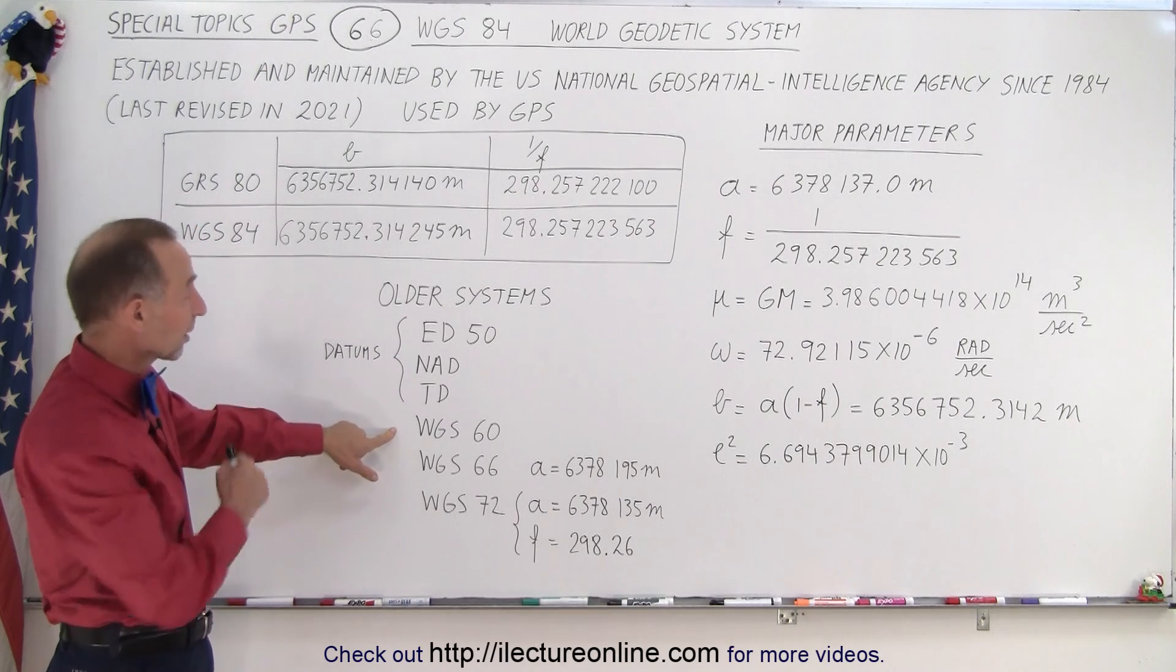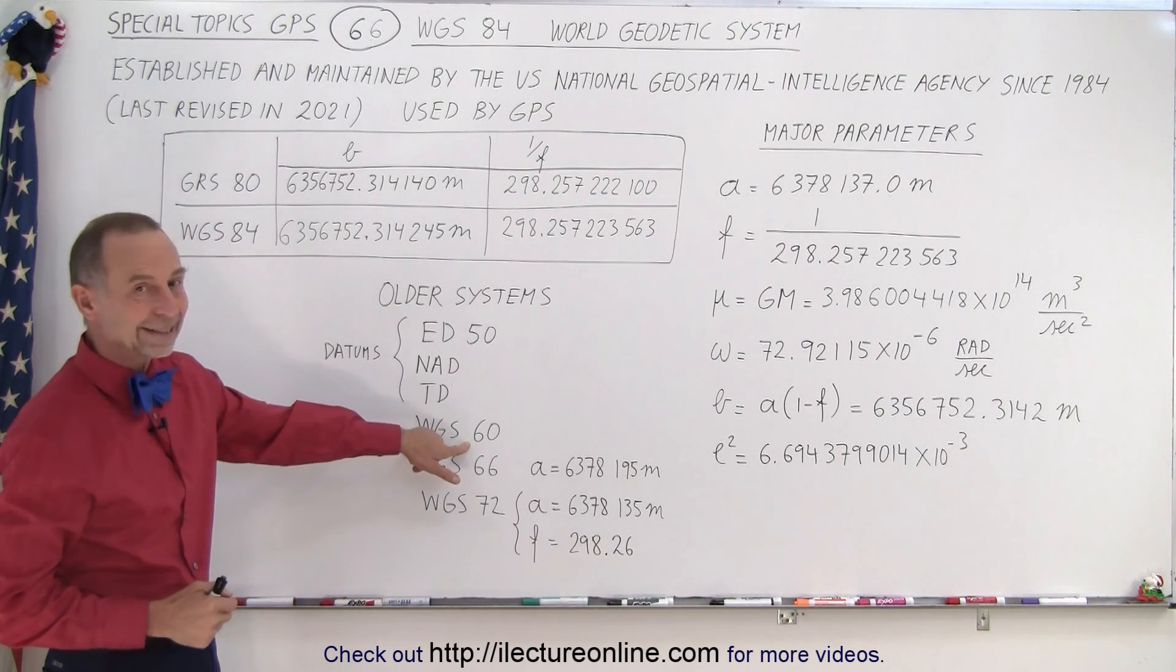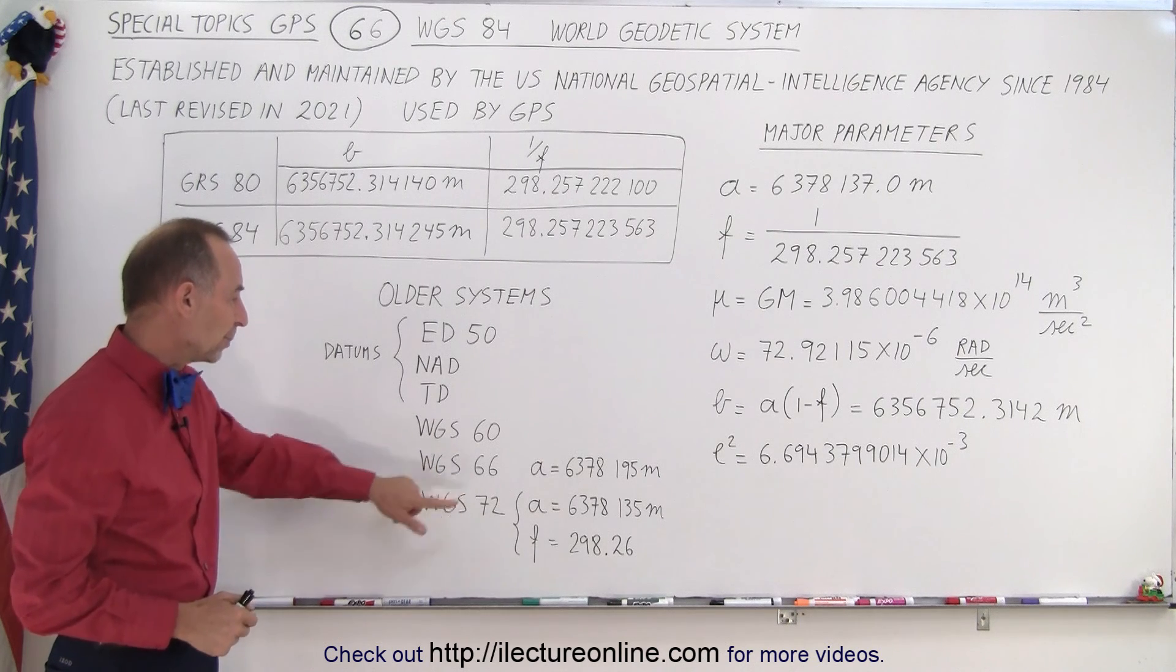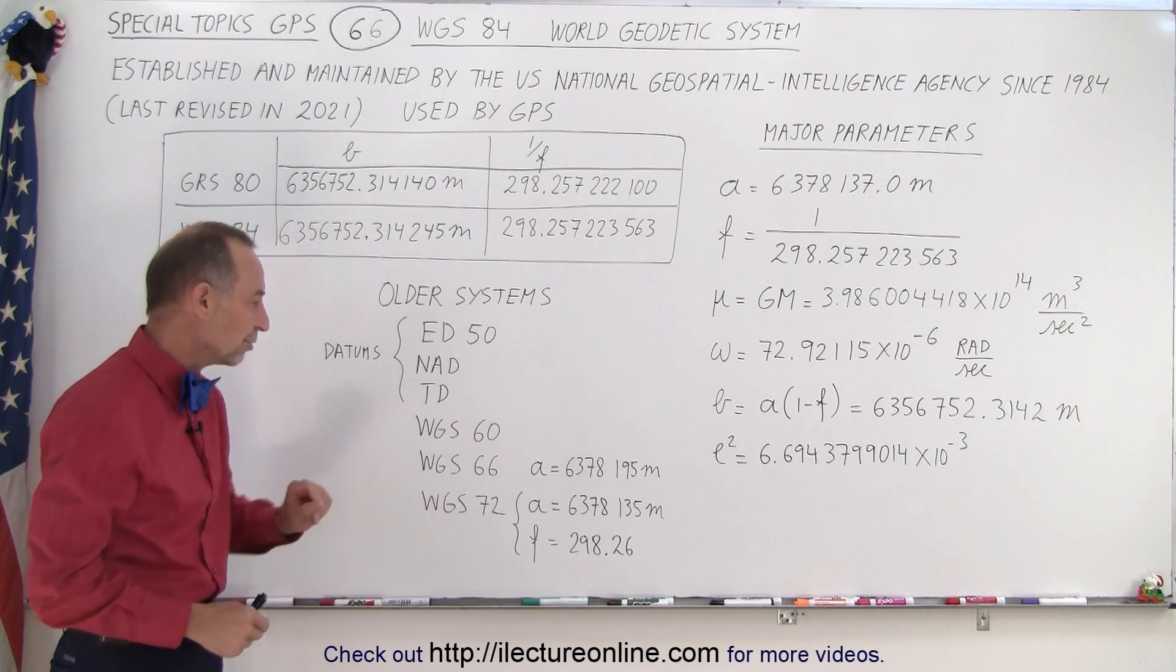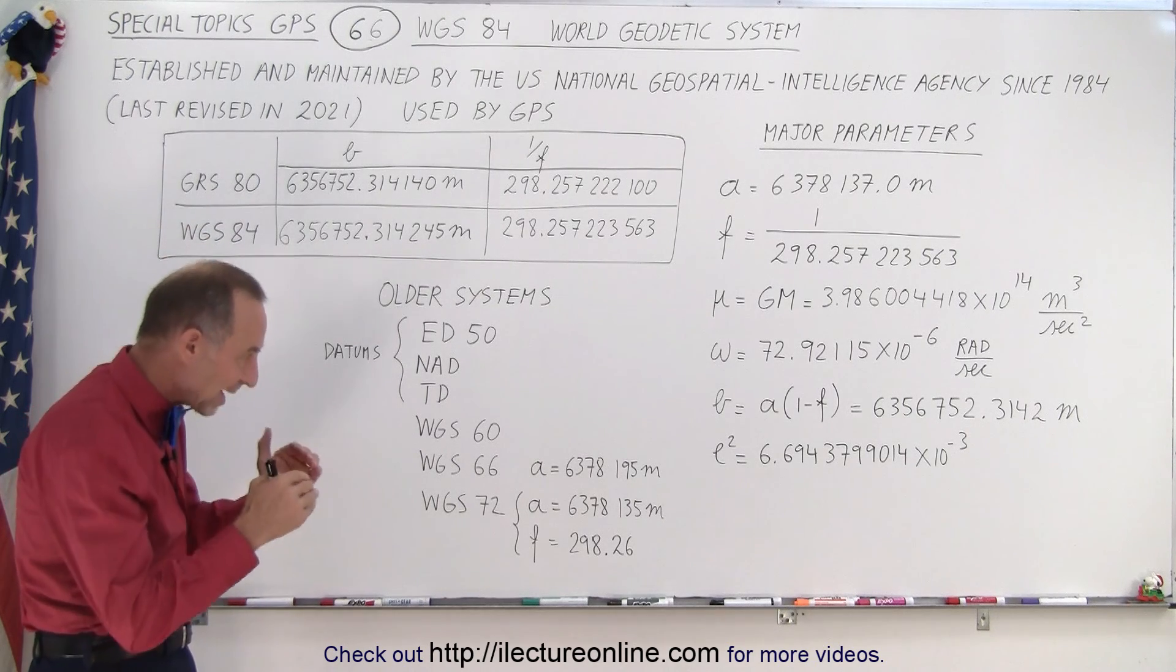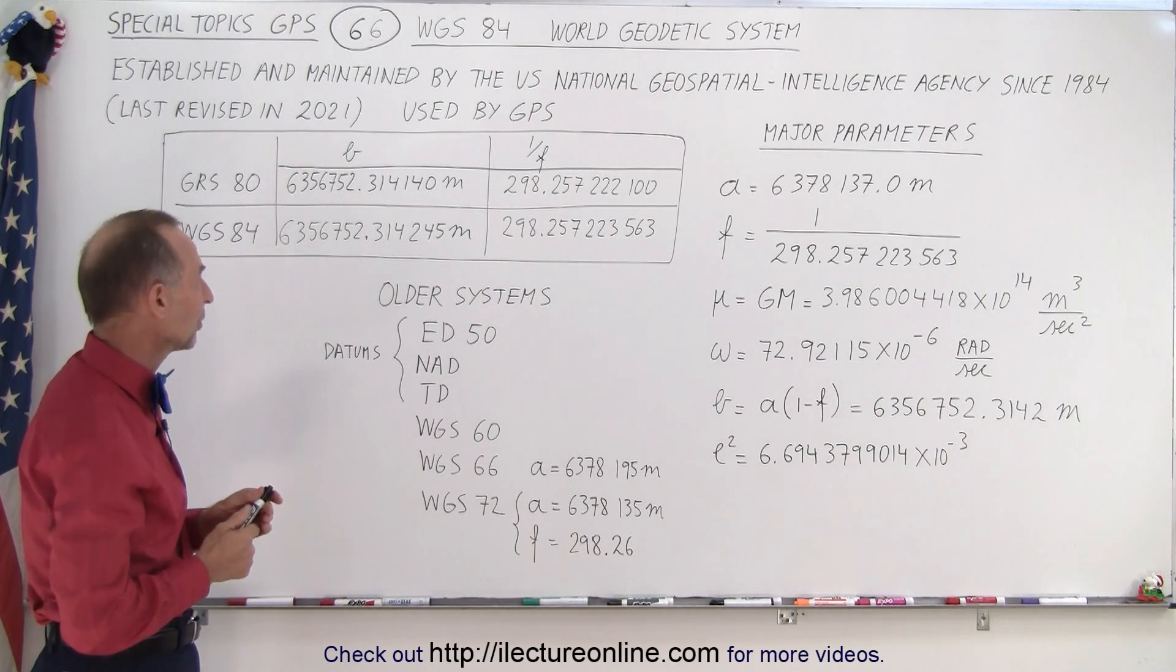So the first WGS, the World Geodetic System, was produced in 1960. Then in 1966 we had another major update. In 1972 we had another major update. And notice how the parameters began to refine into the exact value that they are today.